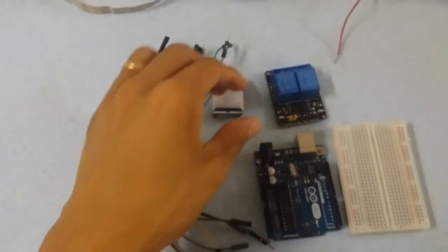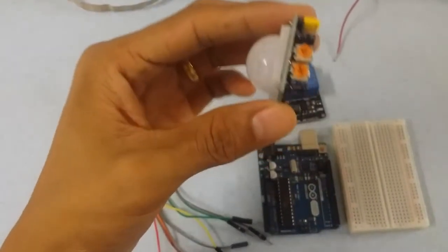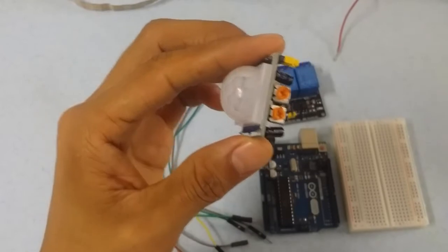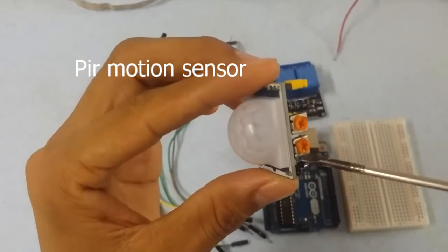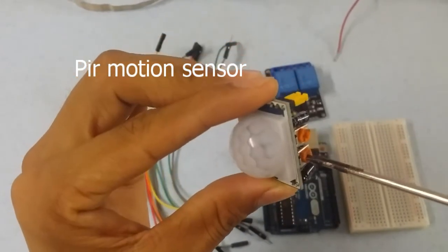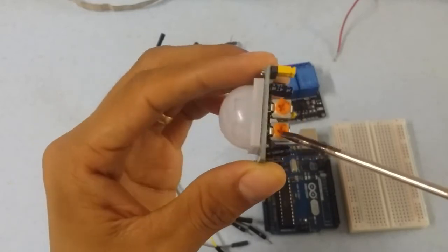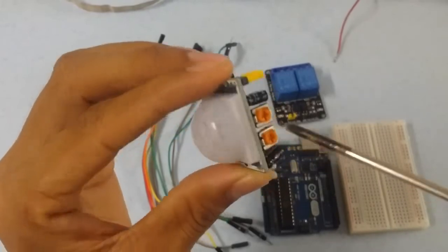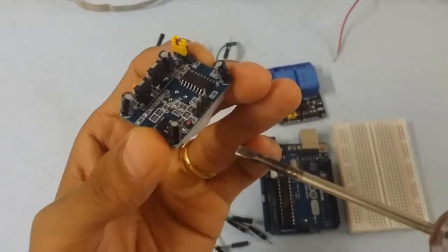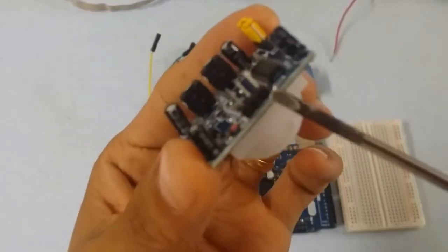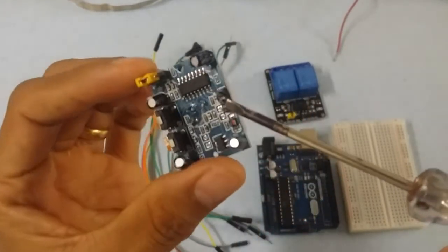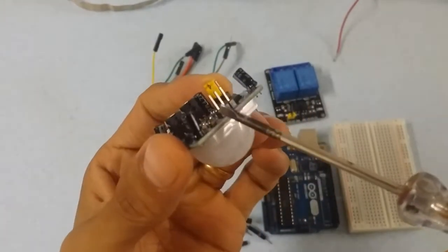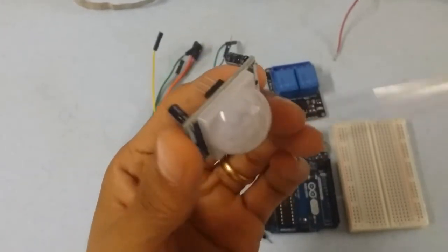I'm going to show you the motion sensor. The motion sensor can detect human movement. It has settings for charging time period and sensitivity distance. There are three pins here: VCC, ground, and output.